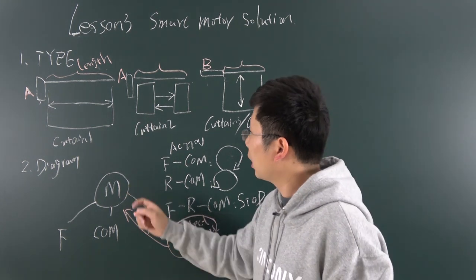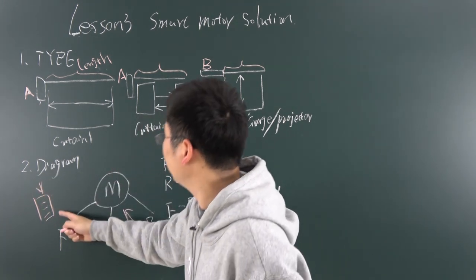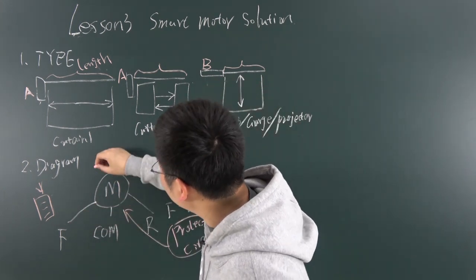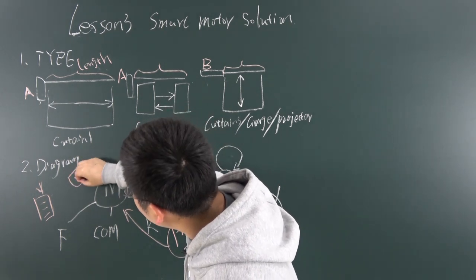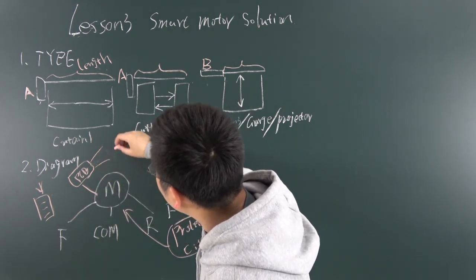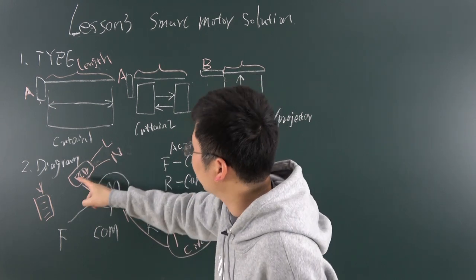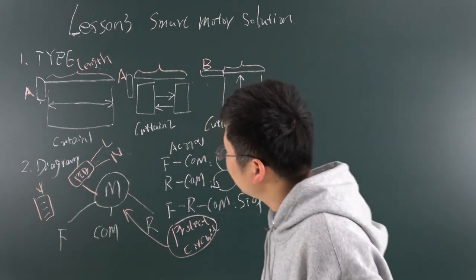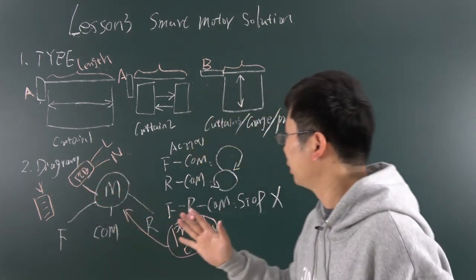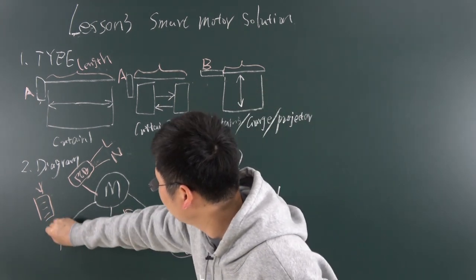Some motors have a remote. Maybe it will have a remote with buttons for up, down, and stop. So usually the motor will have a receiver PCB board. This receiver PCB board will also need L and N connections for power. This L and N supply the power for the wireless receive module for the motor. So this type of motor will have five wires in total. These five wires are widely used. And sometimes just these three lines are needed to change directions.